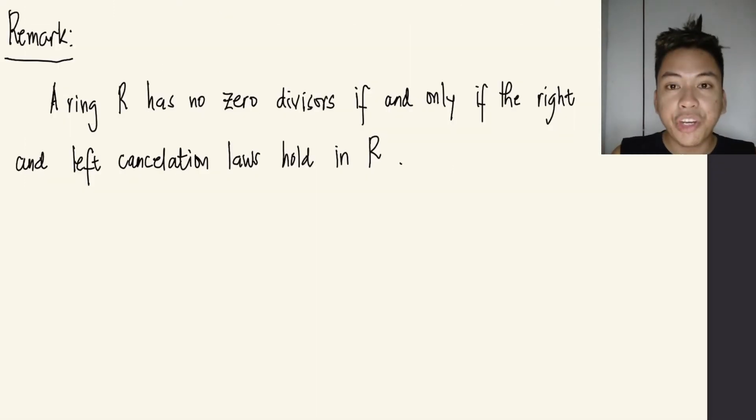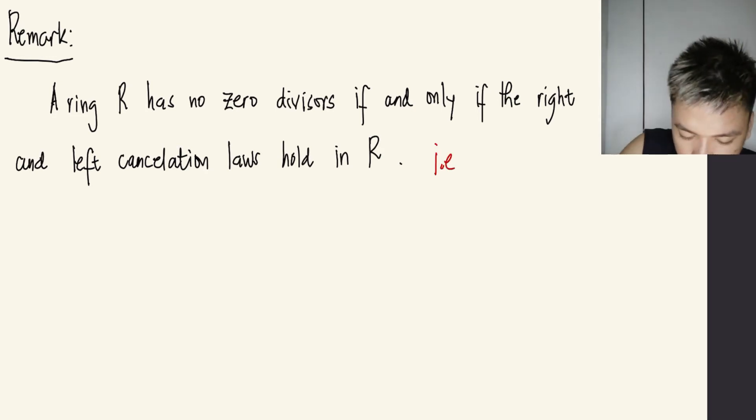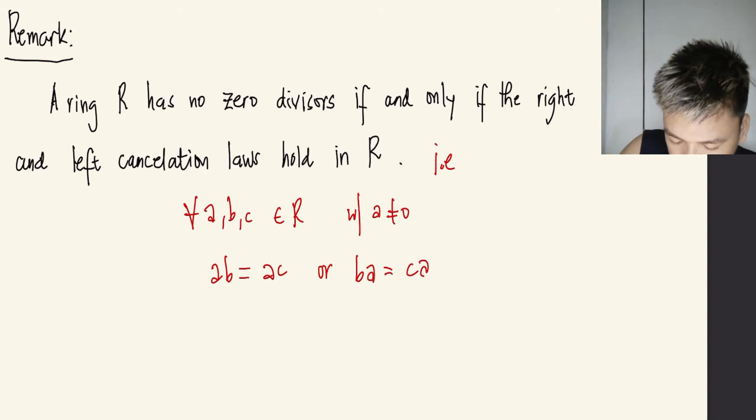So we will consider a remark here saying that if you're given a ring R, this R has no zero divisors, then this will hold if and only if the right and left cancellation laws hold in R. So that is for every A, B, C in R with A not equal to 0, then AB equals AC or BA equals CA implies B equals C. So we will show the proof on this one.